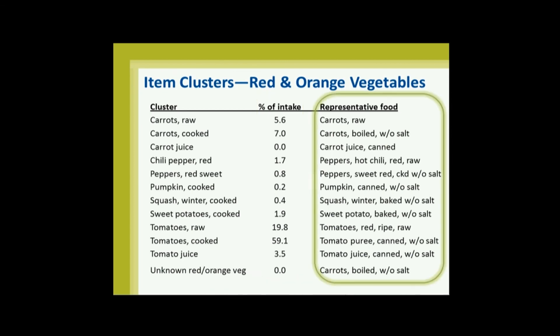Then we pick a representative food that is nutrient-dense — meaning it doesn't have fat added, sugar added, or salt added most of the time. Sometimes we can't find a food with none of all three, but that's our goal. We say this is the food that represents all the cooked carrots or any of these foods if they were to be consumed in a nutrient-dense form. So for cooked carrots, the representative food is carrots boiled without salt.